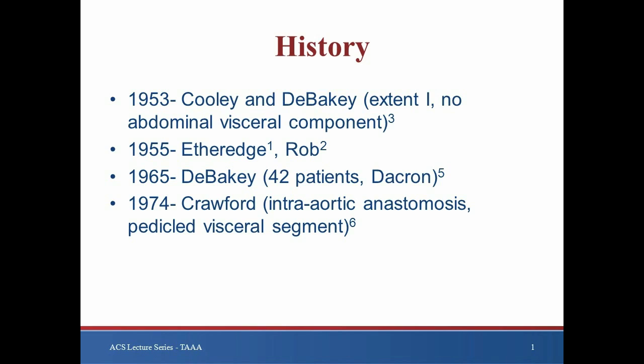Shortly thereafter, DeBakey reported on four cases similar to Etheridge's patient utilizing aortic homografts as the conduit, concluding that aortic shunting was imperative to success. His subsequent report in 1965 included 42 patients in whom knitted Dacron grafts were utilized as the initial shunt and then converted to the formal conduit by stepwise side branch anastomosis of the visceral arteries.